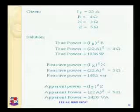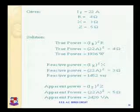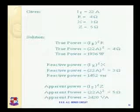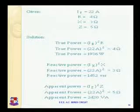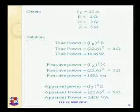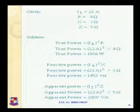Third one is the apparent power, which is equal to I squared into Z. So it is equal to twenty-two squared into five, so our answer is two thousand four hundred twenty VA. This is due to the impedance of the circuit. So to summarize: real power is due to the resistive element, reactive power is due to the inductive and capacitive element, and apparent power is due to the impedance of the circuit.